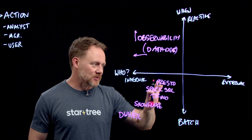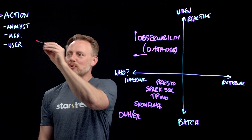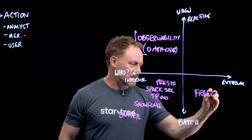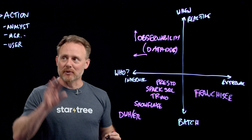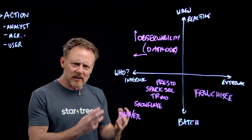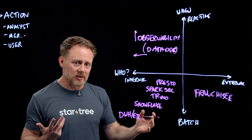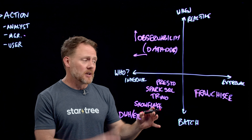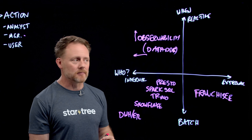Now, looking outside the business — external-facing things in more of a batch mode — I was talking about restaurant managers. The franchisee use case, the restaurant manager, the person outside the business who needs to understand things for next-day purposes: handling inventory, understanding long-term trends. There's very much a case for external-facing analytics, but still in batch mode.